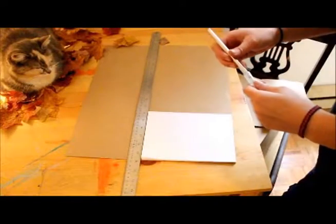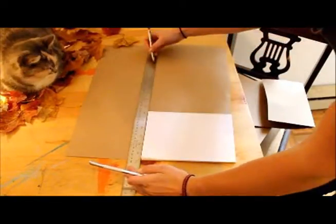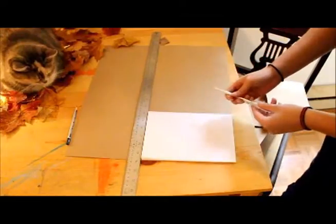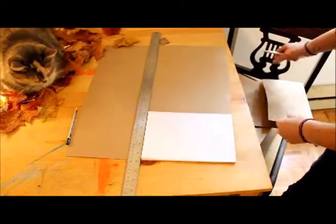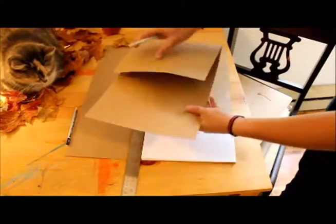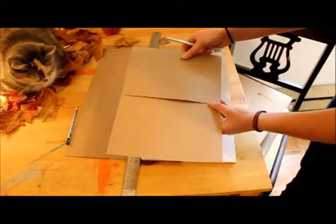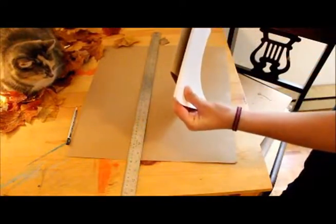Using the book block, figure out how wide your cover needs to be. Remember that it should be just a tiny bit bigger than the book block itself, like one millimeter bigger. We've already cut our piece to the right width. It is obviously too long, which is what we want, so that we can have a little bit of extra for gluing and then we can just trim it in the end.